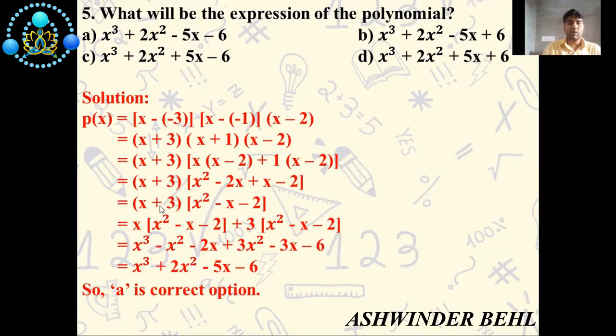Now again we will solve these two terms. x(x² - x - 2) + 3(x² - x - 2). So we get x³ - x² - 2x + 3x² - 3x - 6.